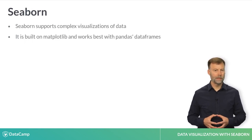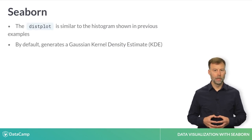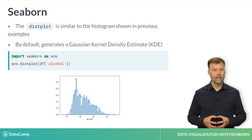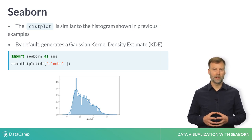Seaborn integrates with the rest of the Python data science landscape by leveraging Matplotlib and integrating with Pandas. In this example, a plot similar to a histogram can be created using Seaborn's distplot function. The resulting output looks like a histogram, but actually is a Gaussian Kernel Density Estimate, or KDE. In the next slide, we will compare this output to the Pandas generated histogram.